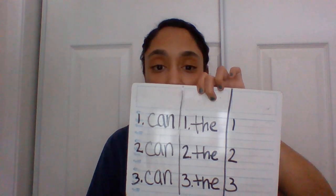Let's go to our second sight word. The second sight word is "the." Let's write the word "the" three times. Give me a thumbs up when you're ready. This is the way I write the word "the." Great job.